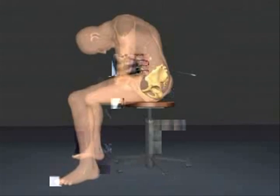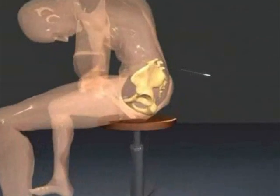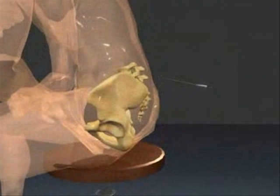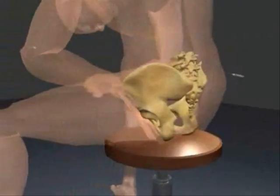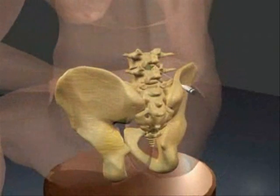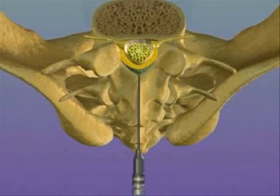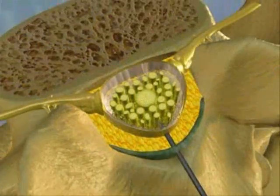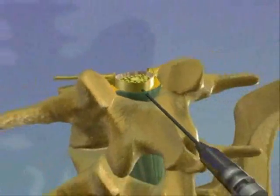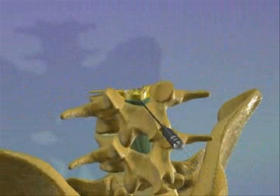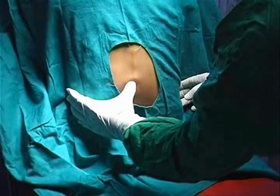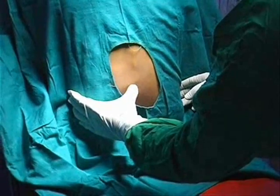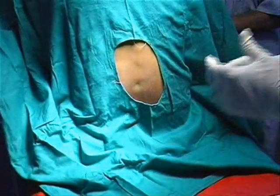The ideal location is the interspace between the third and fourth lumbar vertebrae. You identify this by checking for the highest point on the iliac crest — not the anterior superior iliac spine, but the highest point on the iliac crest — which corresponds to the L3-L4 interspace. You could go one space above or one space below.